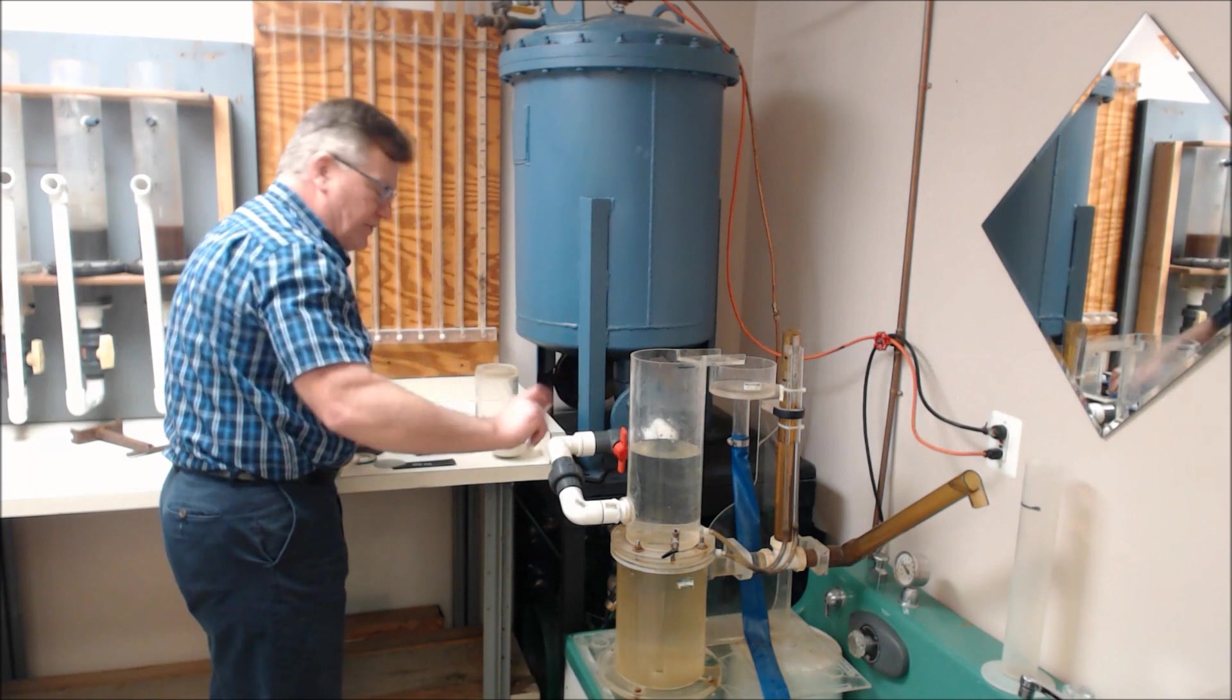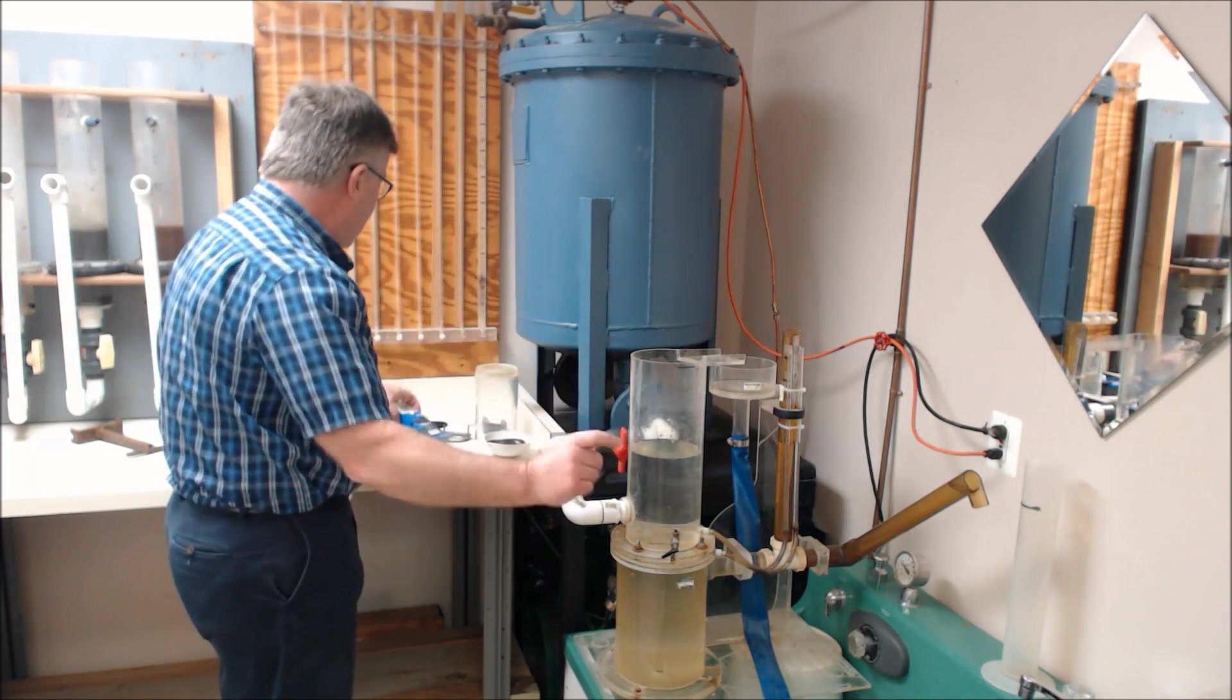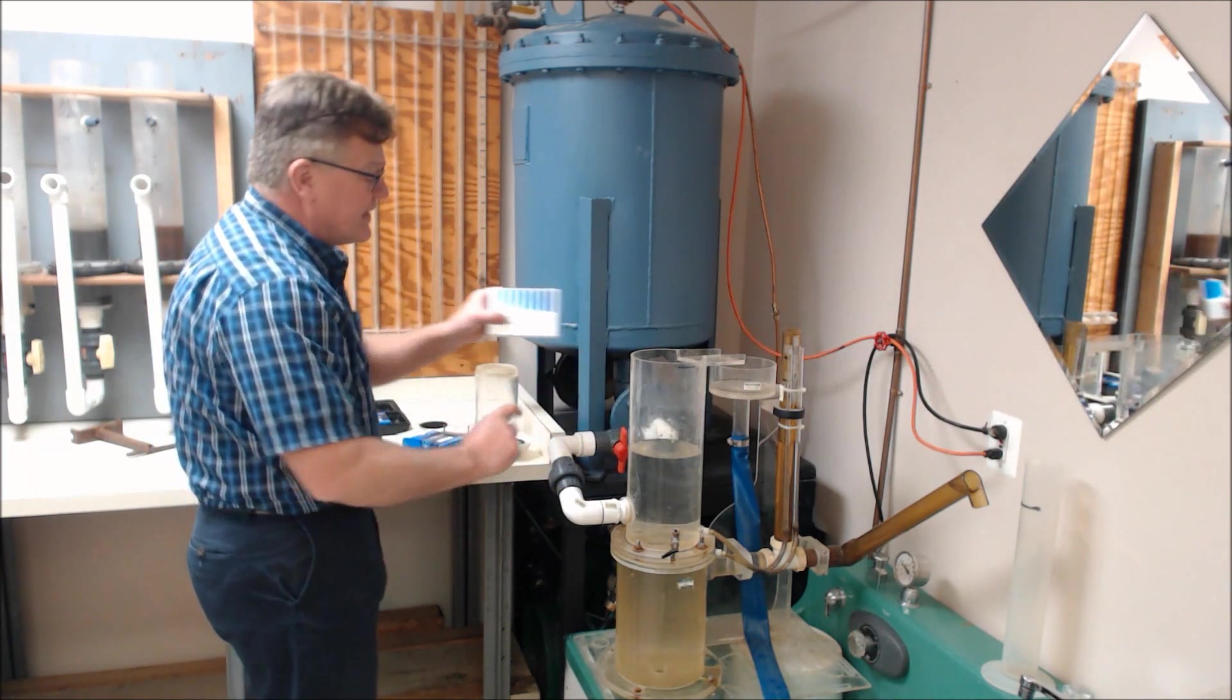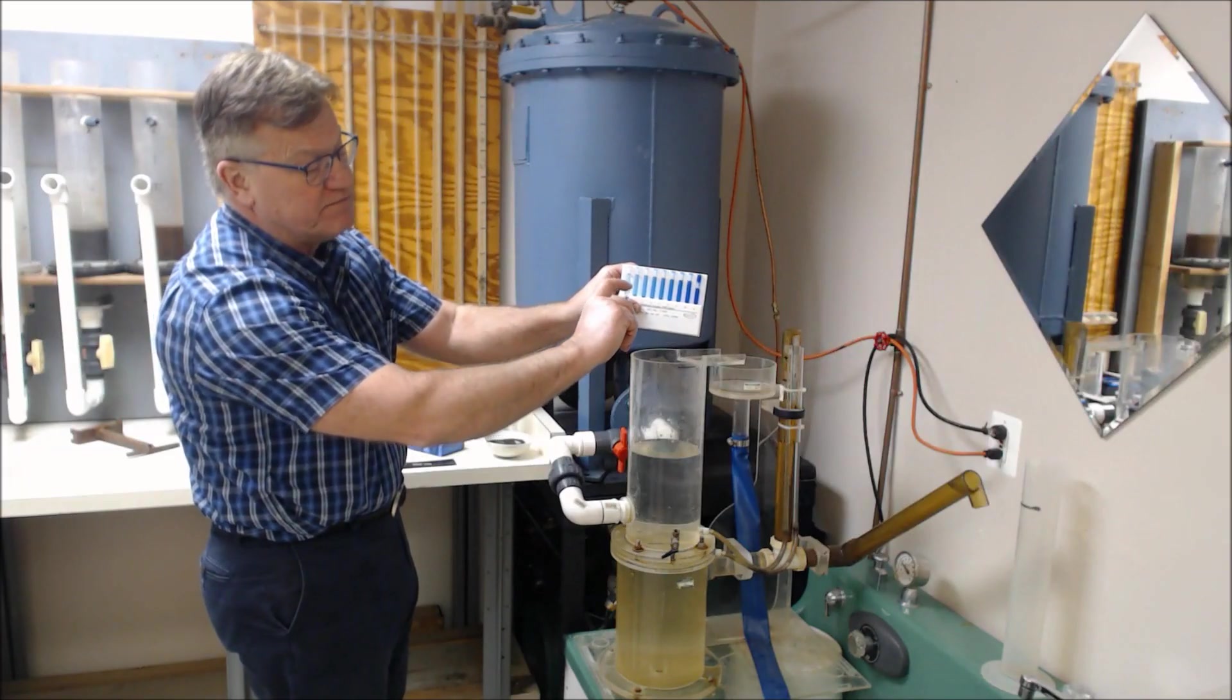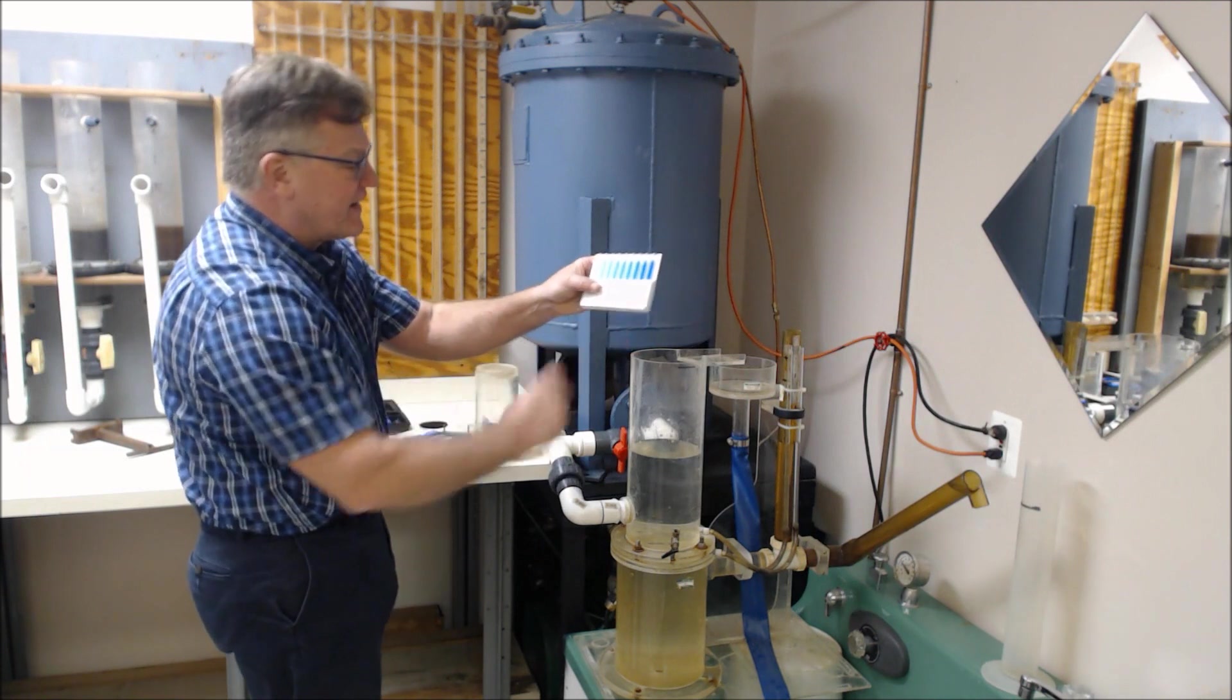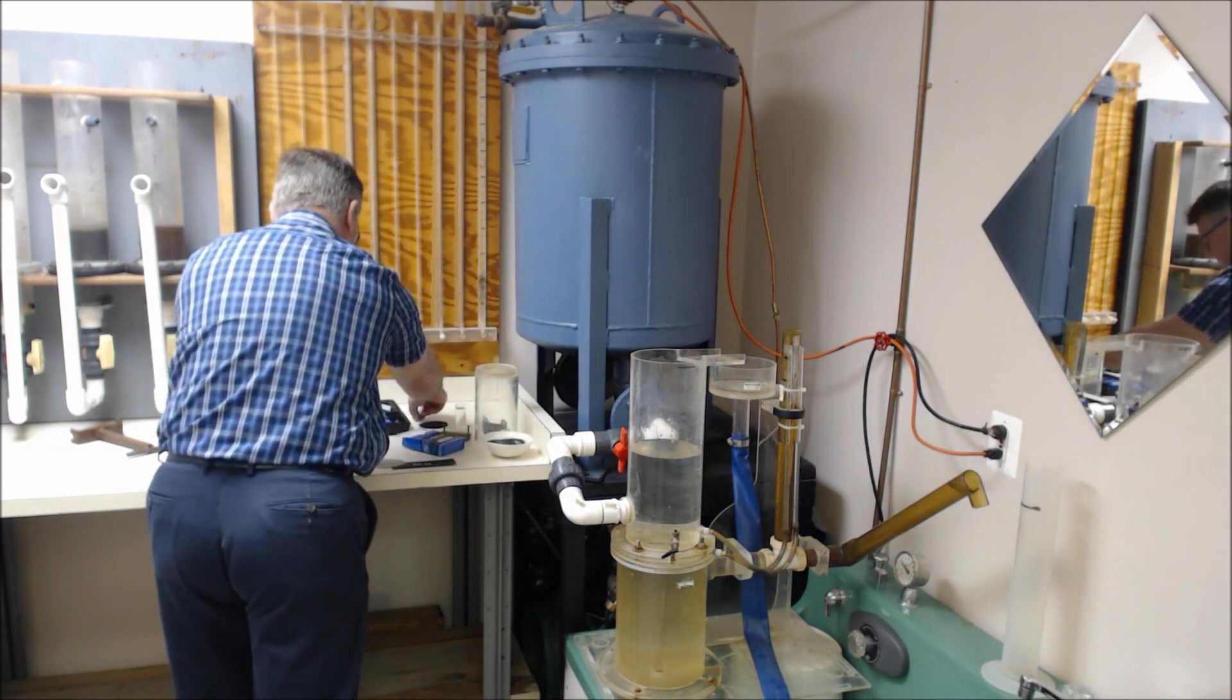These are ampules, and these ampules will change color colorimetrically to give you an idea of where you are in regards to dissolved oxygen content. This is down in the neighborhood of 4 or 5.